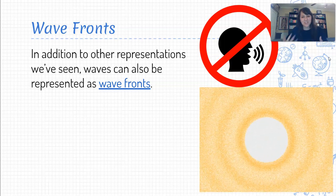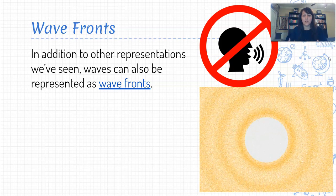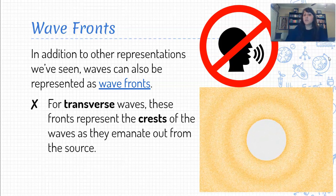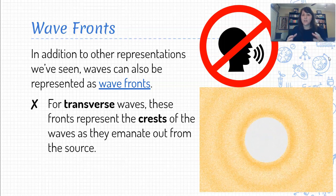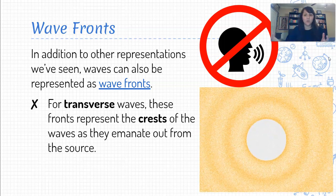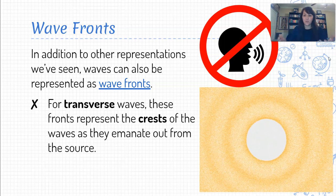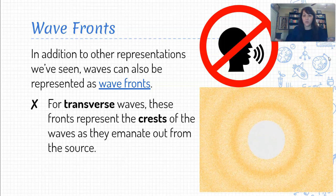Now, probably the simplest way for us to think about what those wave fronts really mean is if we're talking about a transverse wave, we can think of these fronts as representing the crests of those transverse waves as they move away from the source of that wave.